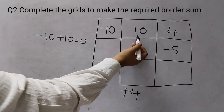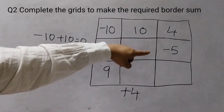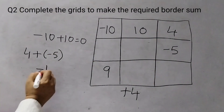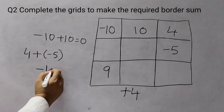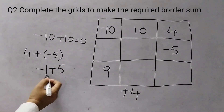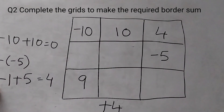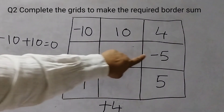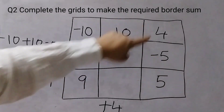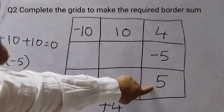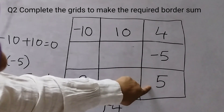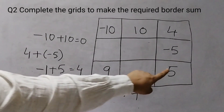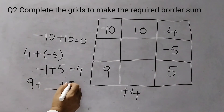So minus 10 plus 10 is 0, 0 plus 4 is 4 — that is done. Now for the right column: 4 plus minus 5 is minus 1, and we need plus 4. If I add plus 5 here, minus 1 plus 5 is 4, so I will add a 5 here. You can also think of it as: we want to cancel out minus 5, so minus 5 plus 5 makes it 0, and then we have 4.